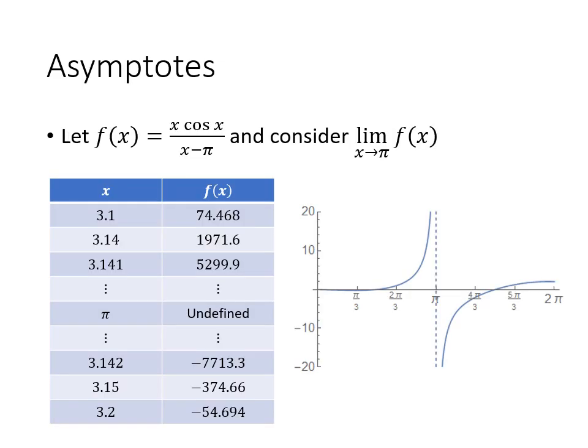So here's an example. f of x is x times the cosine of x divided by x minus pi. And I want to look at the limit as x approaches pi of f of x. So again, what I'm doing is I'm making a table of values. If I try to plug in pi exactly, my function is undefined, so I can't do that. So instead, what I'm doing is plugging in numbers that are close to pi.